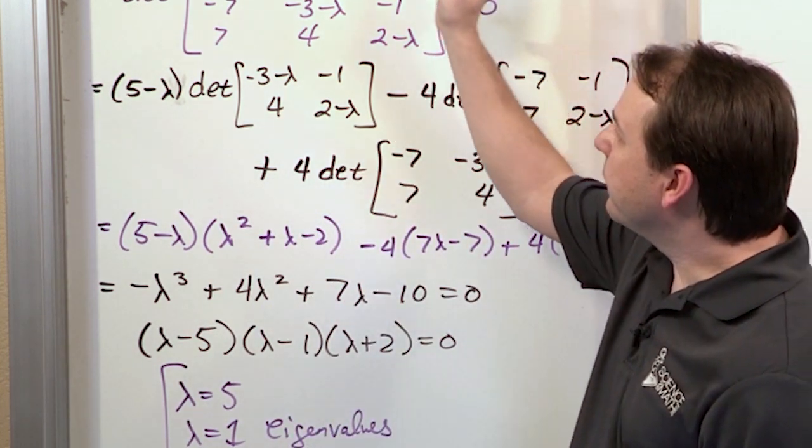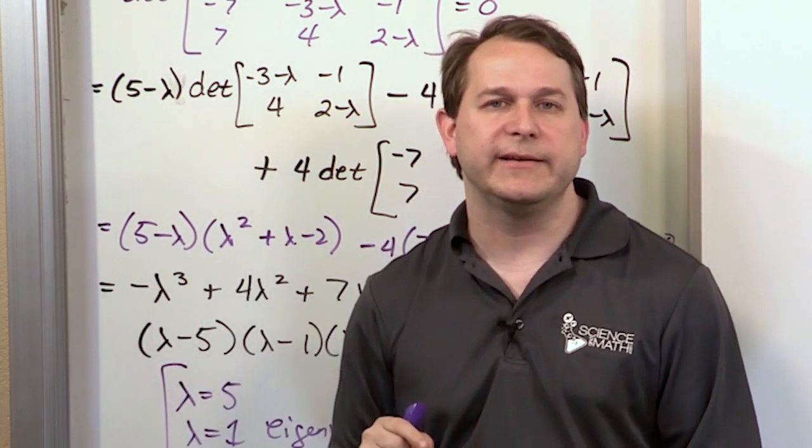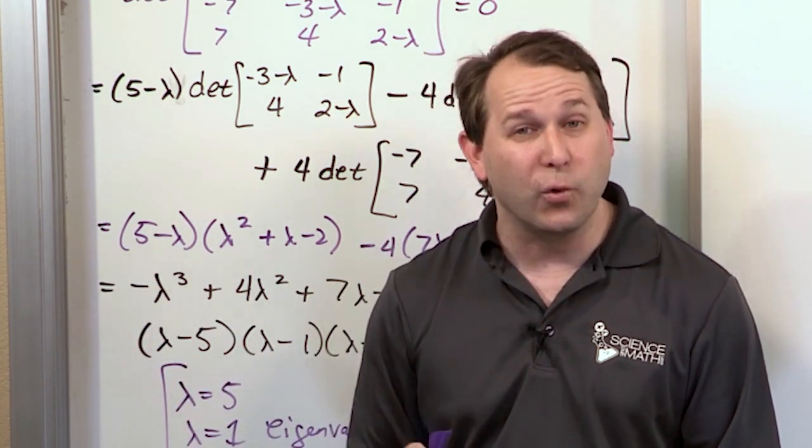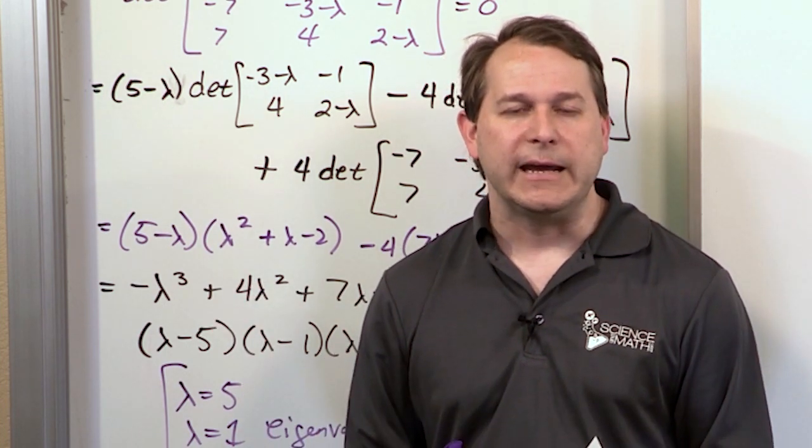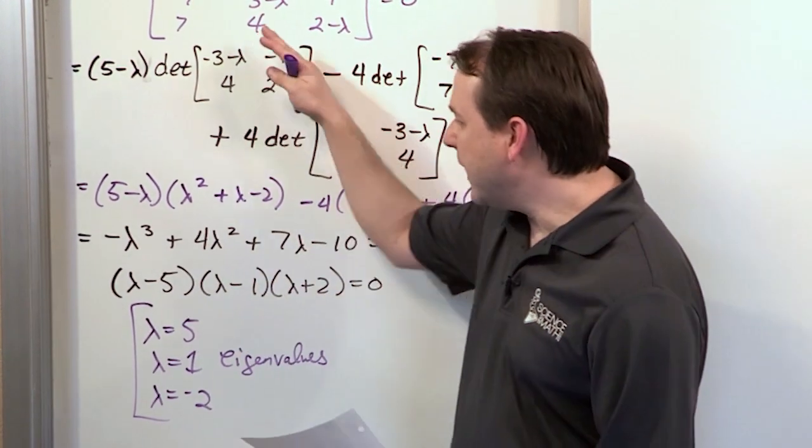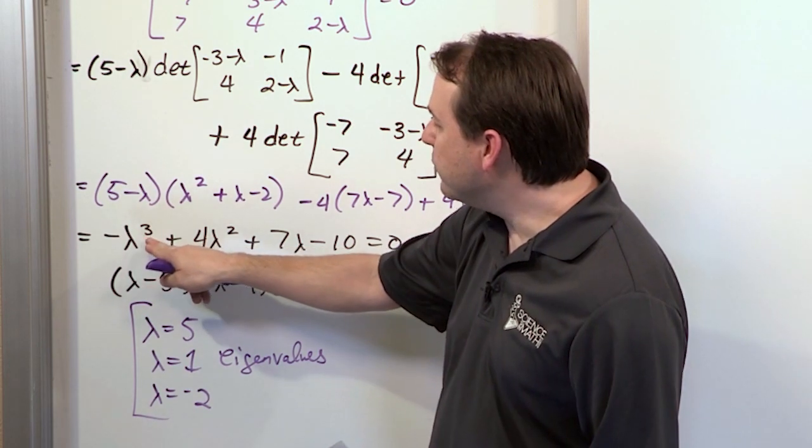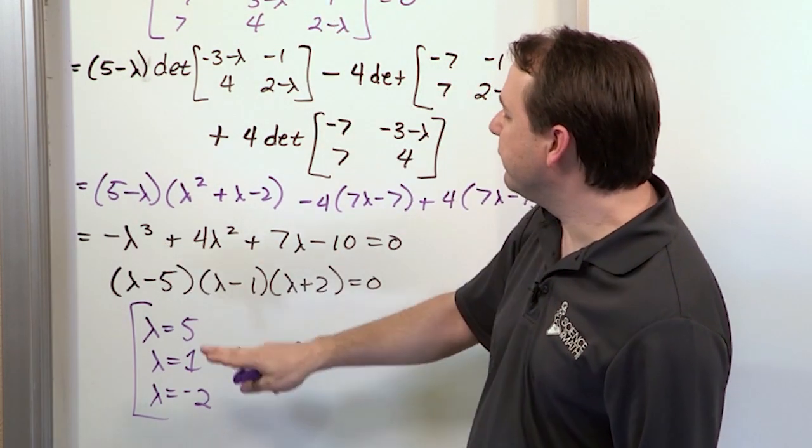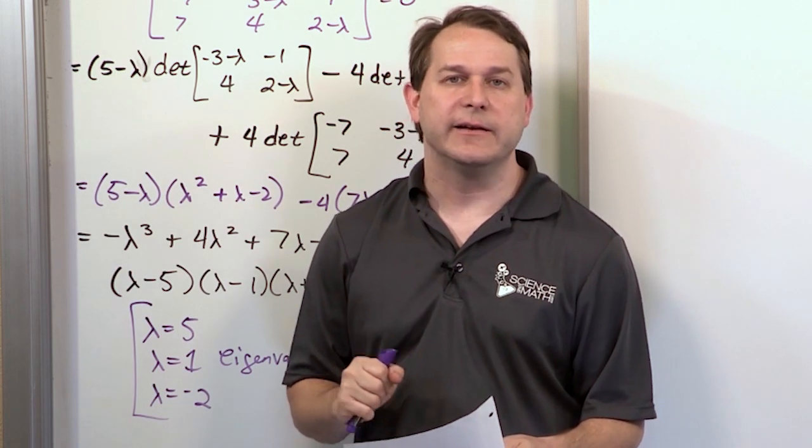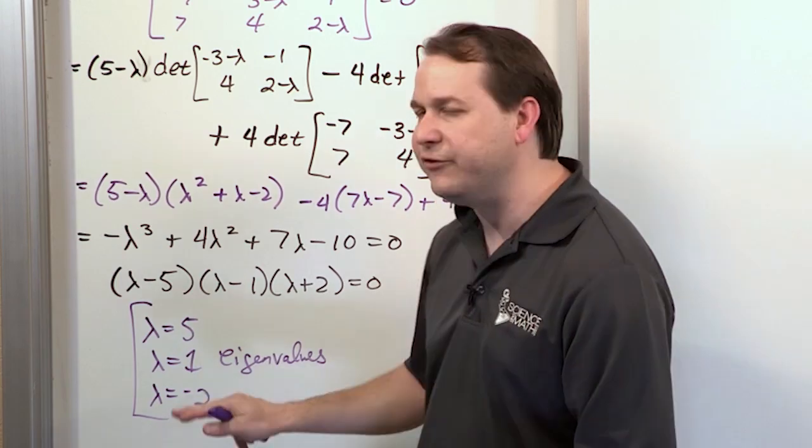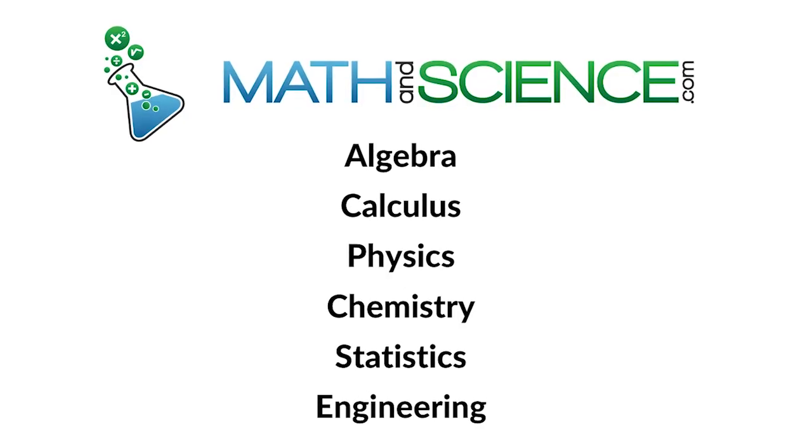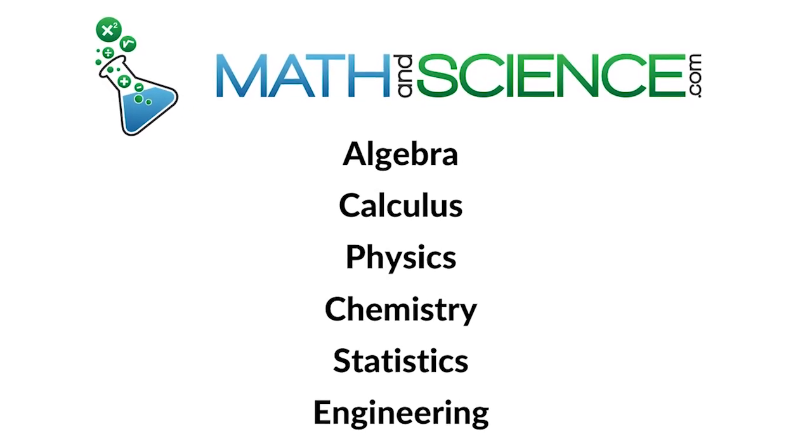This is how we did it for a 3x3 matrix. I want to do one more quick example for eigenvalues on a 4x4 matrix just to show you how you would scale what we're doing here. Notice that the characteristic equation we got was a cubic, which is because of the 3x3 nature that led to three distinct eigenvalues. And when we go on to find eigenvectors, we'll have vectors associated with each one of these guys. Learn anything at mathandscience.com.